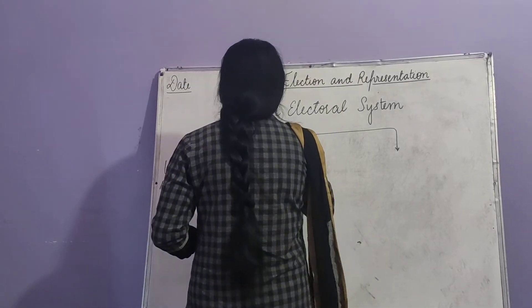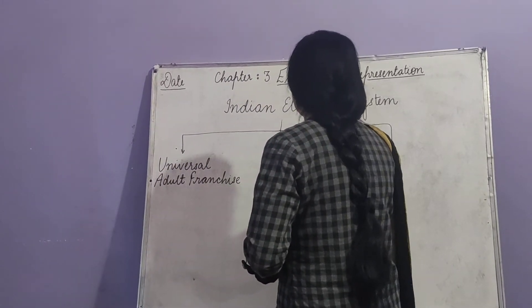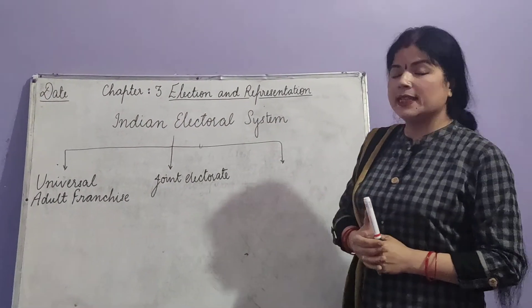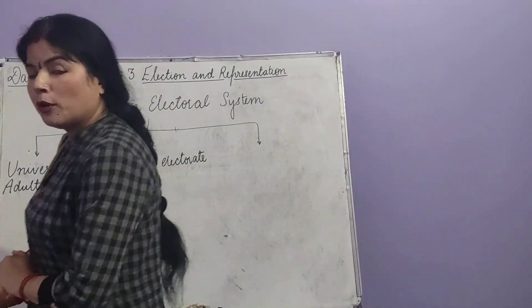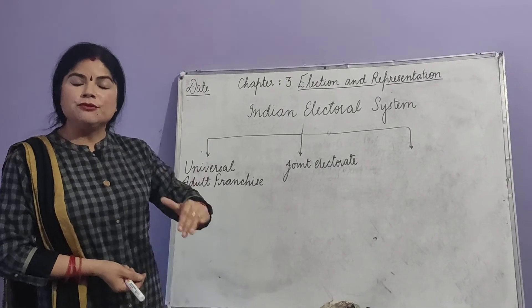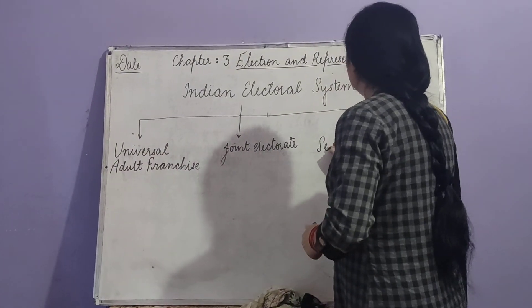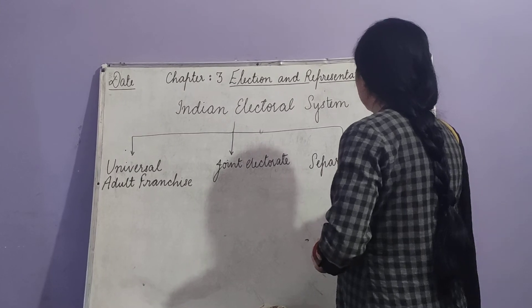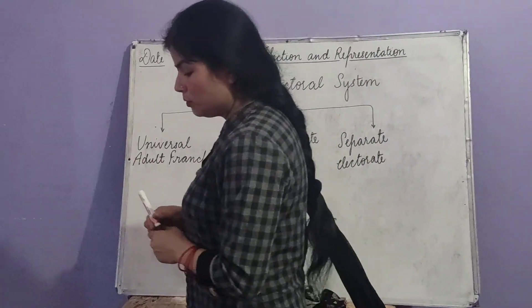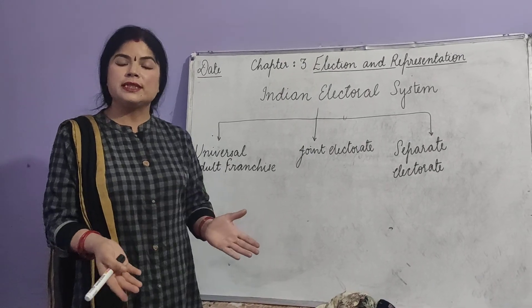Second is joint electorate. Under joint electorate, the entire population votes for the candidates so that they can become representatives and work for the people's goodness. Next is separate electorate. Under separate electorate, all the people do not vote together — separate constituencies can be formed.